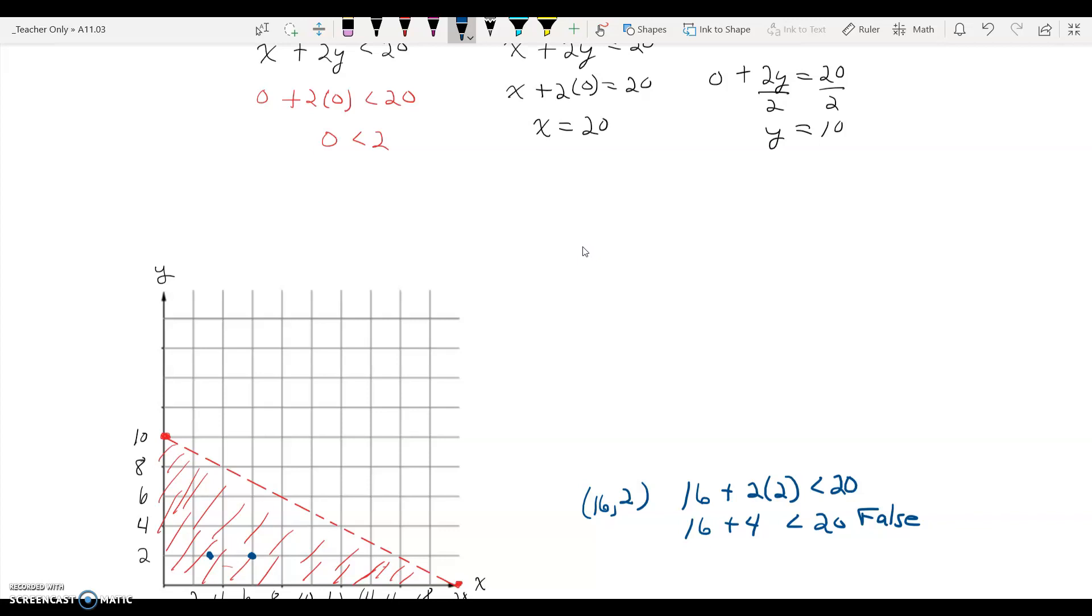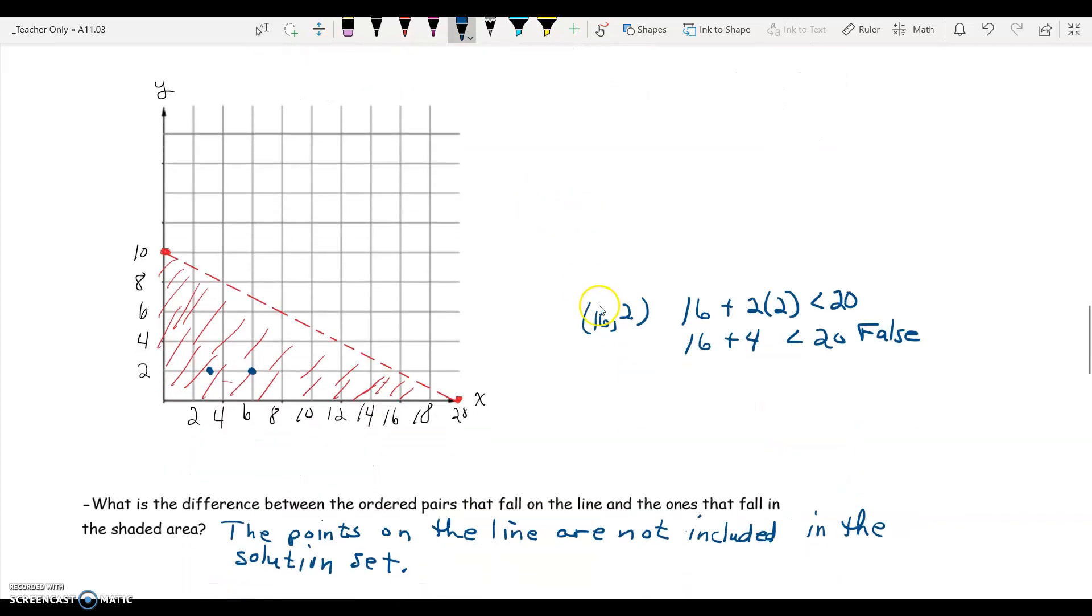Therefore, 16 comma 2 is not a solution to this inequality, and notice it's not part of our shaded region, it's actually on the line, and since this line is dashed or dotted, however you want to refer to it, it is not part of the solution.